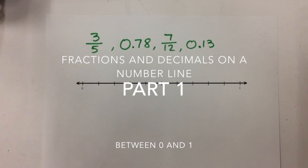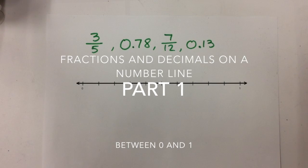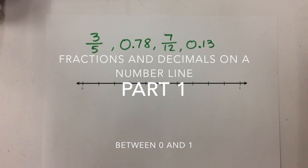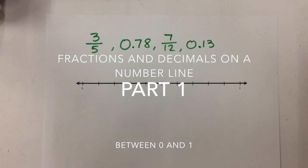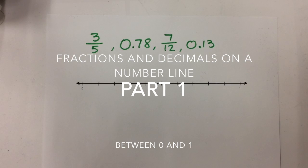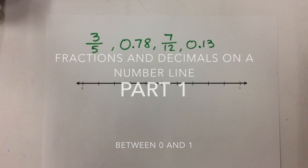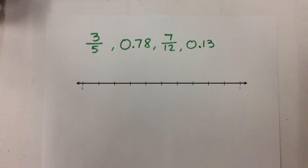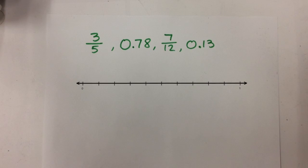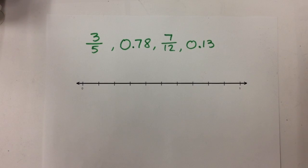Today we are going to learn how to put fractions and decimals on a number line. This is very similar to what you were doing in the last unit when you needed to put them into order, except now instead of just ordering them, you're going to put them on the number line itself.